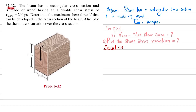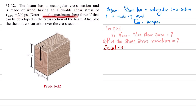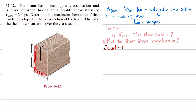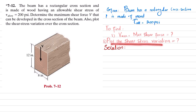Welcome back. Problem 7-12: the beam has a rectangular cross section and is made of wood having an allowable shearing stress of 200 psi. Determine the maximum shear force V that can develop in the cross section of the beam. Also plot the shear stress variation over the cross section. The height of this beam is 12 inches and the width is 8 inches.